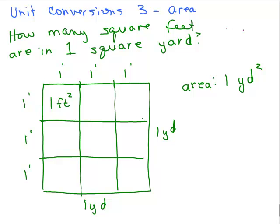Think of it as tiles. Usually when you buy carpeting it's by the square yard, but when you buy tiles it might be by the square foot. So if you think of this as one big square yard of carpeting and instead you were going to put tiles that are one foot by one foot, there would be nine square feet in there. See how there's nine of these little squares? So the answer is nine square feet. Notice that does not mean that the nine is squared — it means you've got nine square feet altogether.